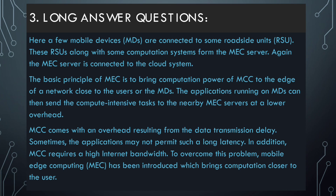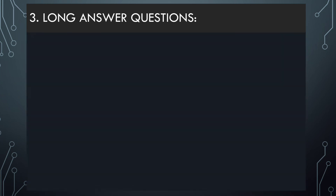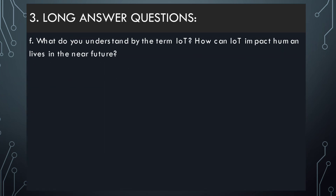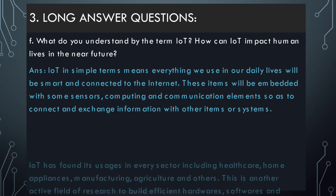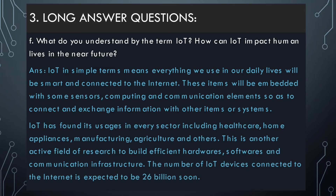What do you understand by IoT? How can IoT impact human life in the near future? IoT means connecting all our daily life activities to the internet — like paying bills, recharging, buying medicine — completely doing all tasks using the internet. This is known as IoT. You can write the answer exactly from screen. At present, 26 billion devices are connected to IoT.